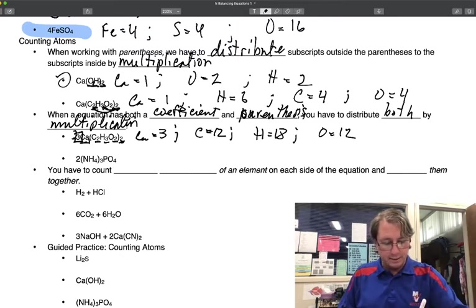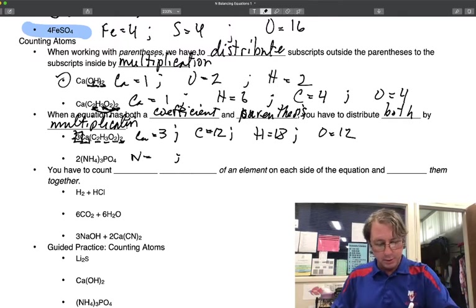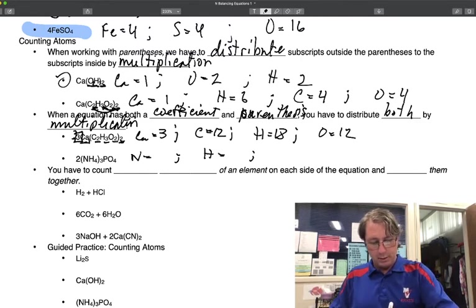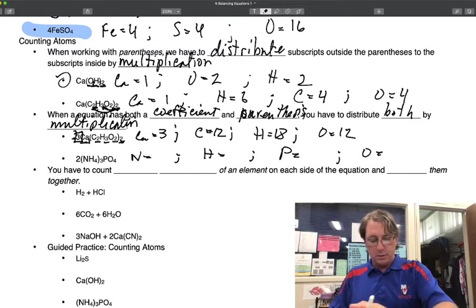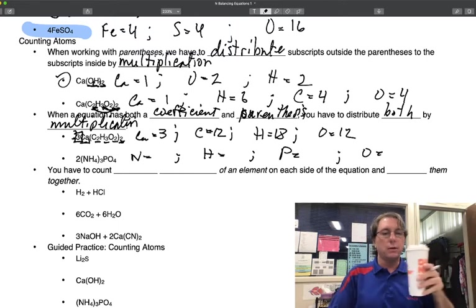In this second example, N equals, remember I'm taking all the elements separately, and I know they're elements because they have capital letters. H equals, P equals, O. Why don't you try this one, push pause, and when you're done, come back and I'll do it.